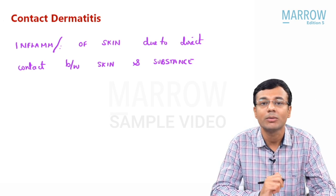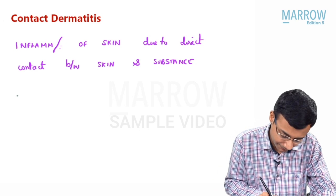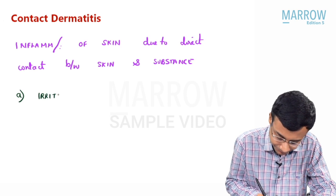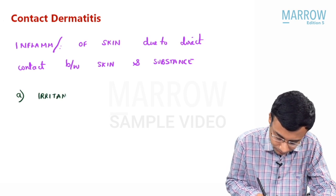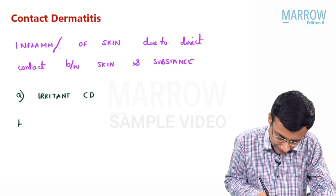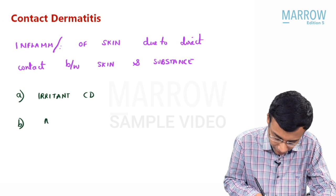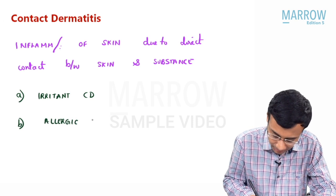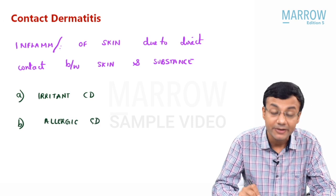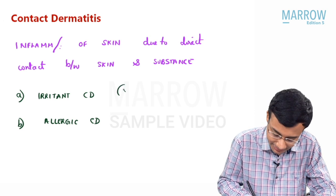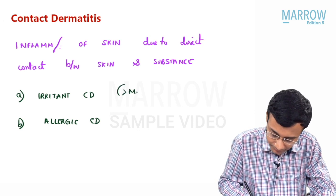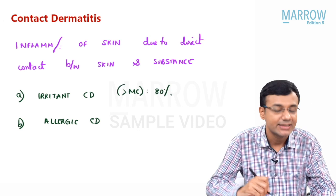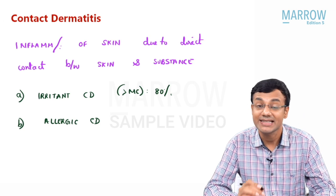In this relation, we have two important types. Number one, irritant contact dermatitis. Number two, allergic contact dermatitis. These are the two types of contact dermatitis we need to remember. Irritant contact dermatitis is more common, seen in around 80 percent of the patients, and allergic contact dermatitis is less common.